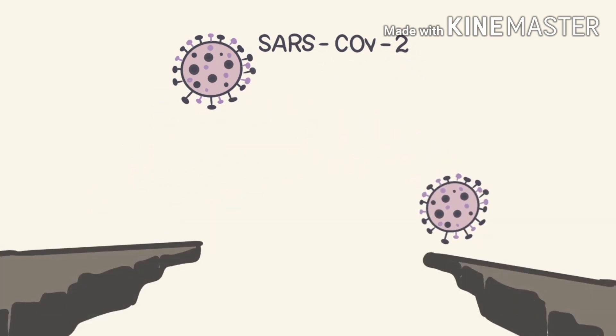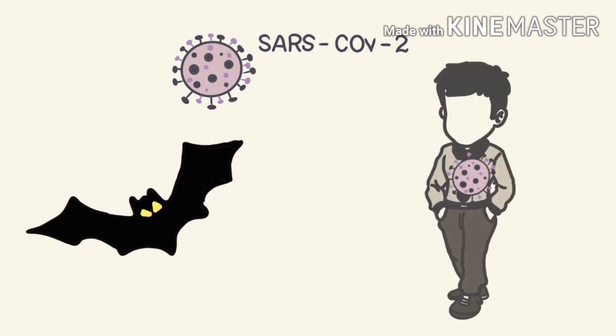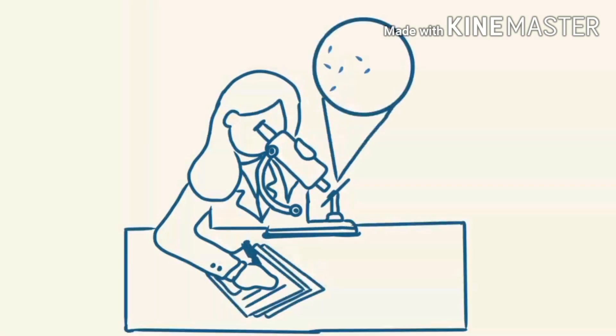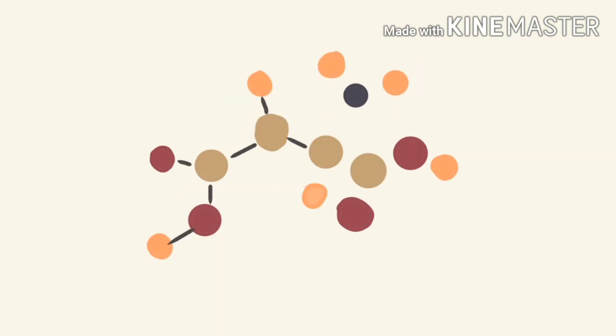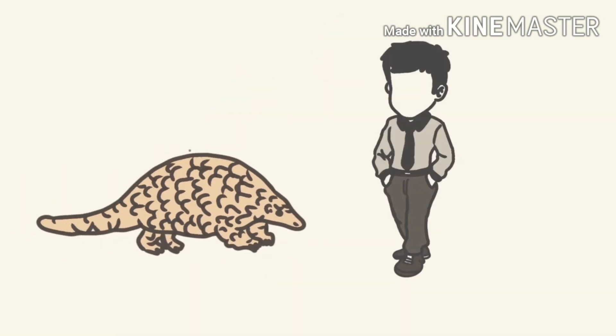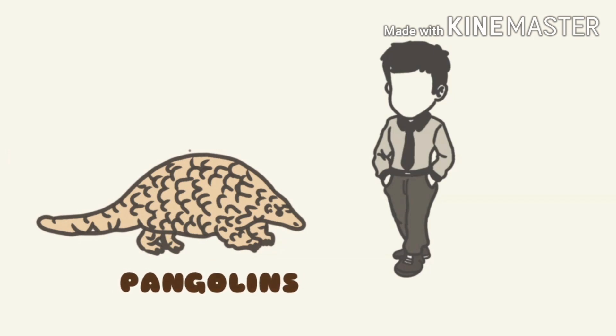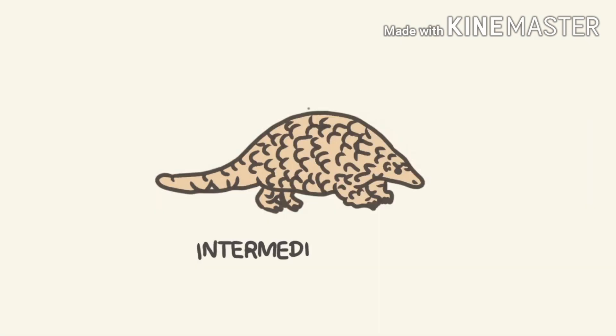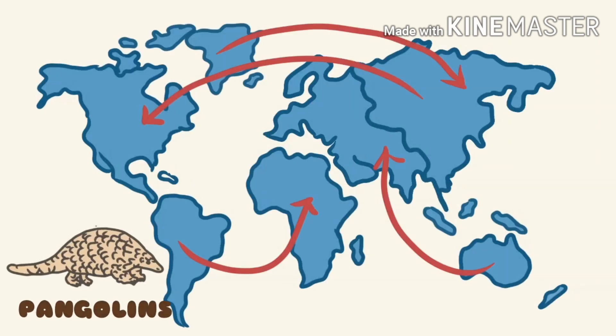Some Chinese researchers have also found out that there is only one amino acid difference between the viruses found in pangolins and those found in humans, suggesting it to be the intermediate host. Pangolins are traded all over the world as their scales are thought to be useful for protection and are used in some spiritual rituals.